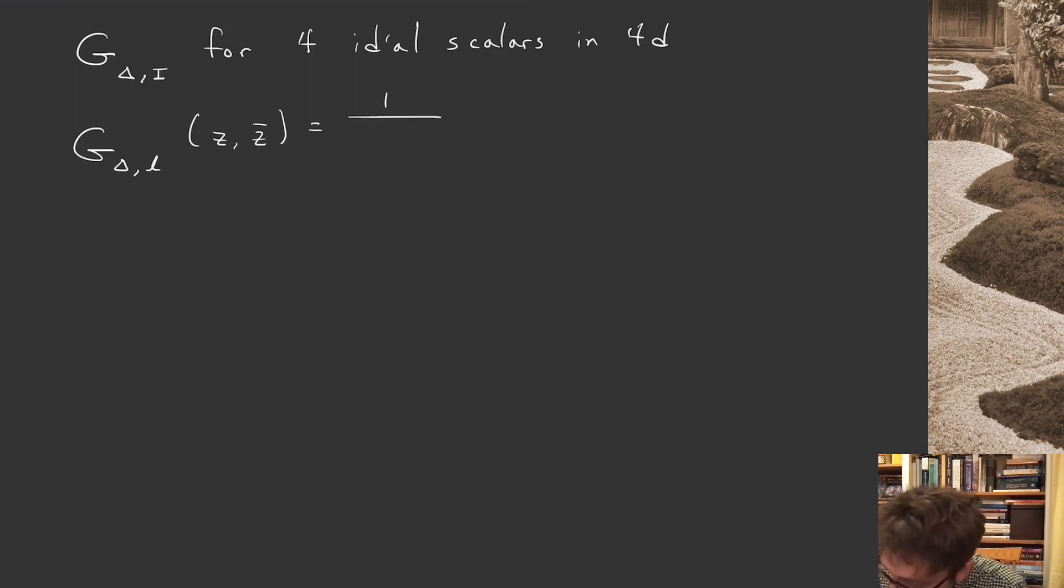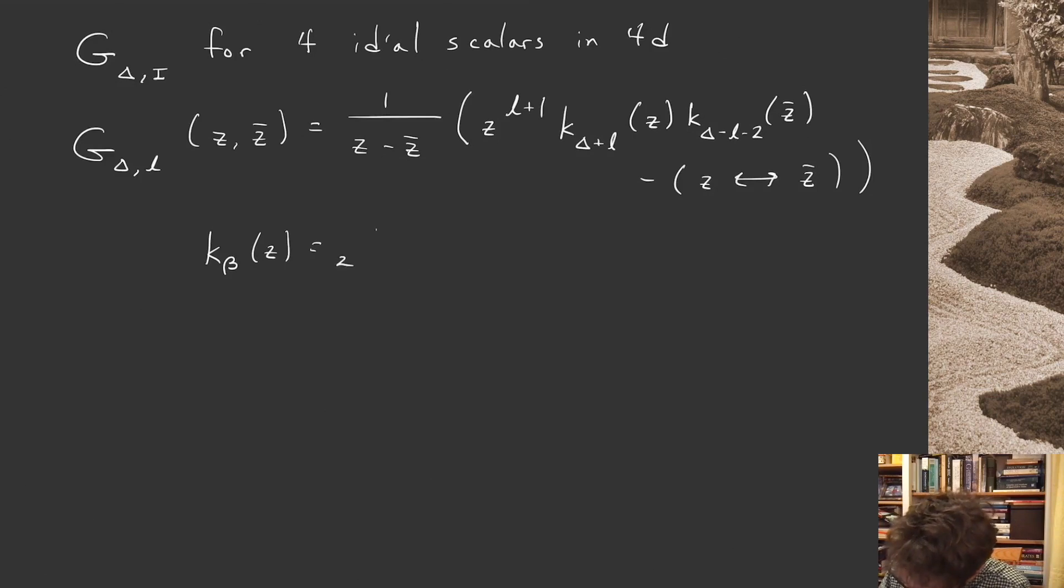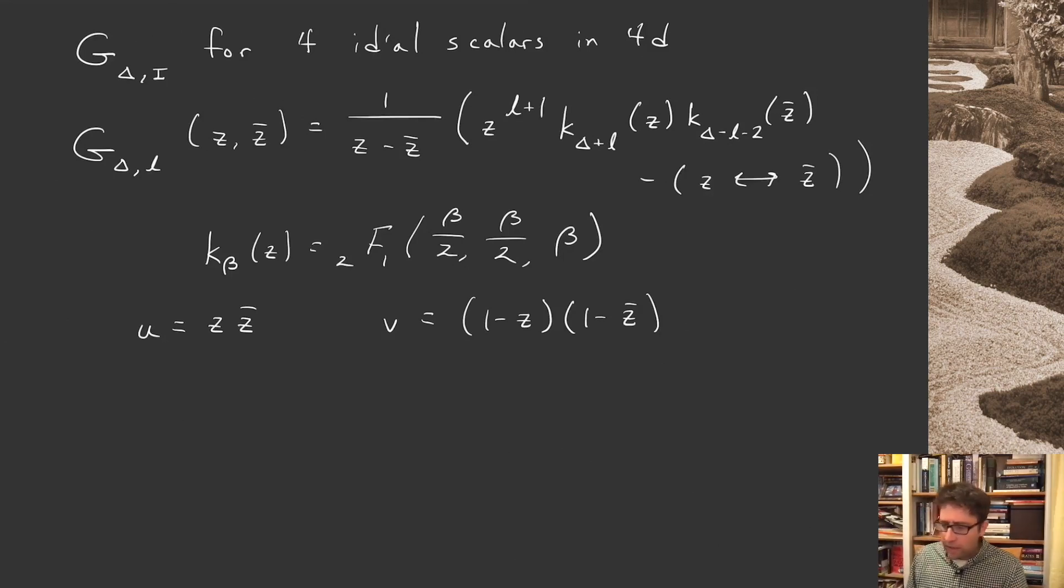This object I can write is 1 over z minus z bar. I'm not going to derive this for you. z to the delta plus 1, k delta plus l, z, z, k delta minus l minus 2, z bar minus z swapped with z bar. And I have to unpack this expression. So k beta of z, that's a hypergeometric function, 2F1 of beta over 2, beta over 2, beta. And the z and z bars, those are cross ratios, but they're related to the u and v in a funny way. So u is z z bar, and v is 1 minus z, 1 minus z bar.